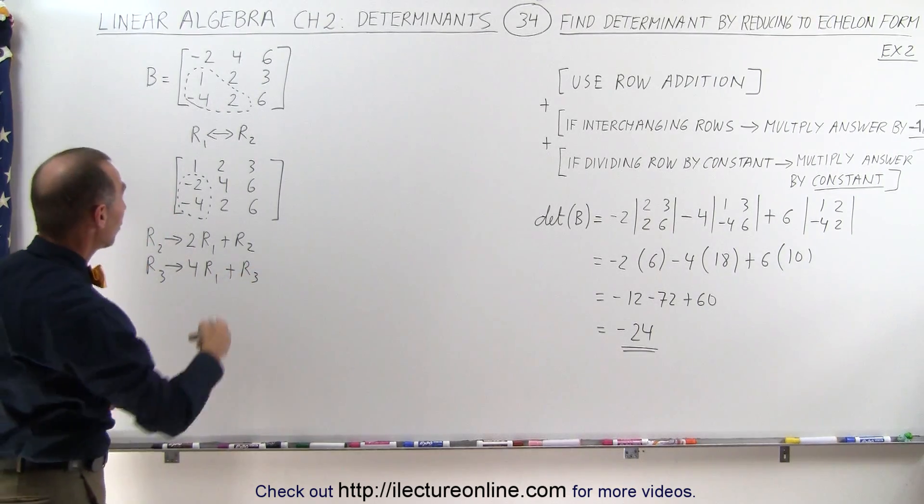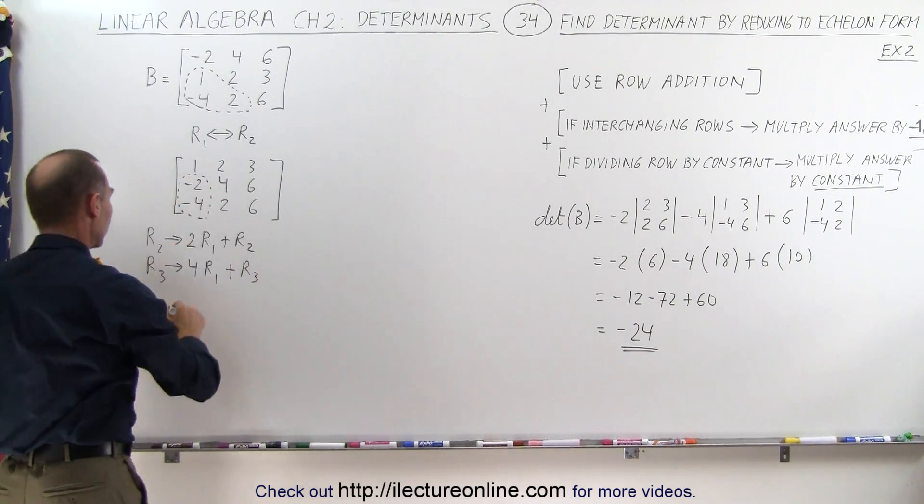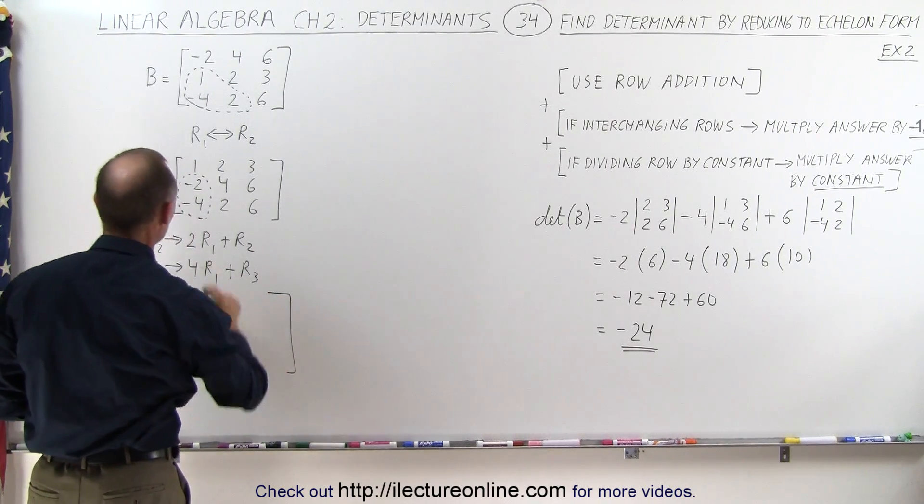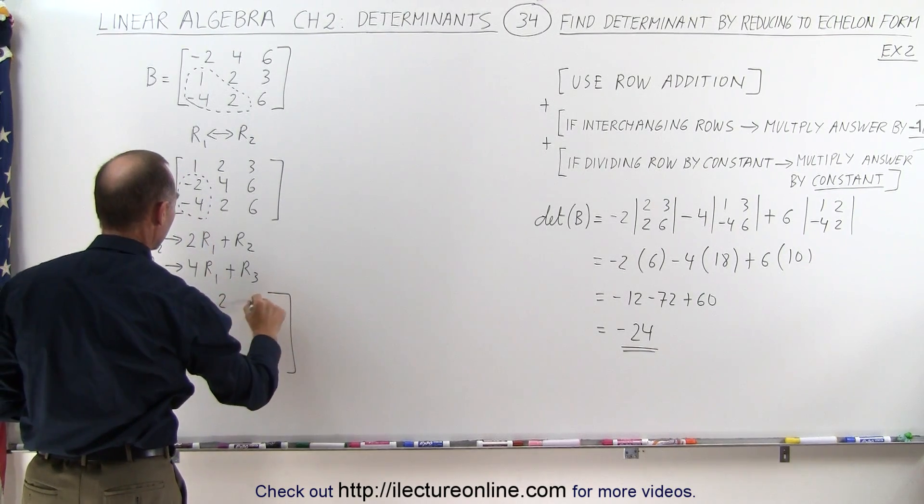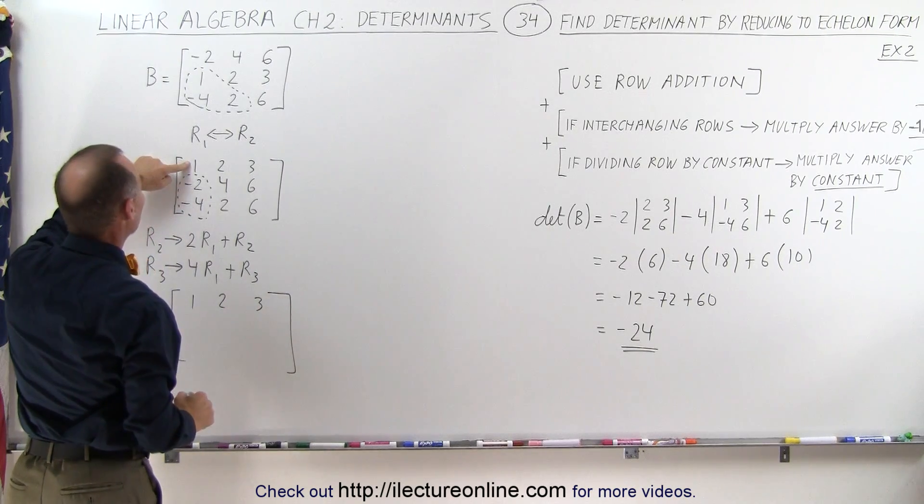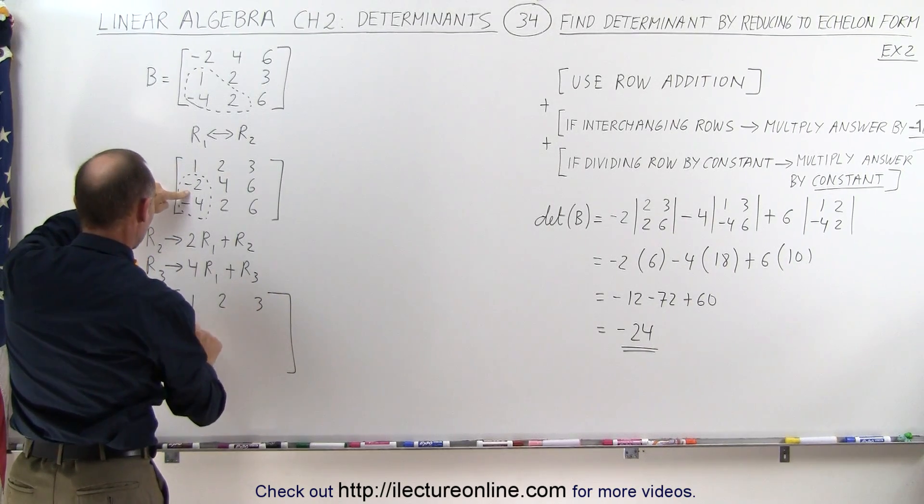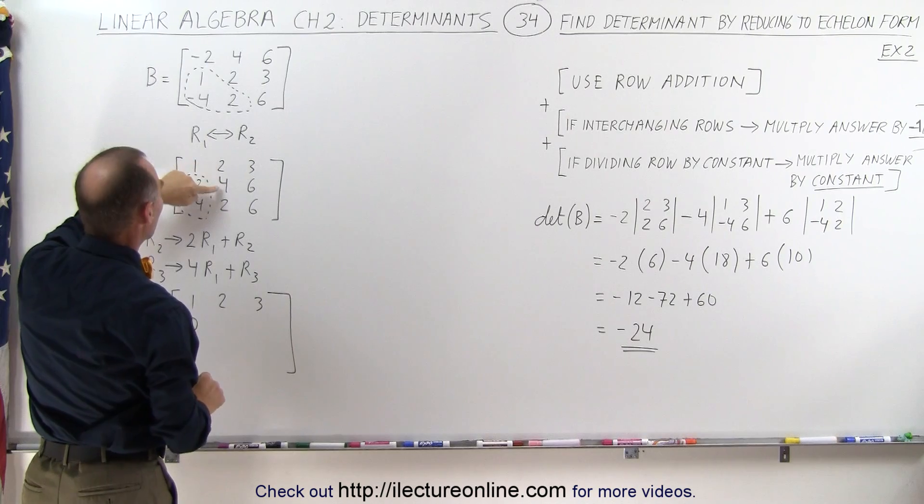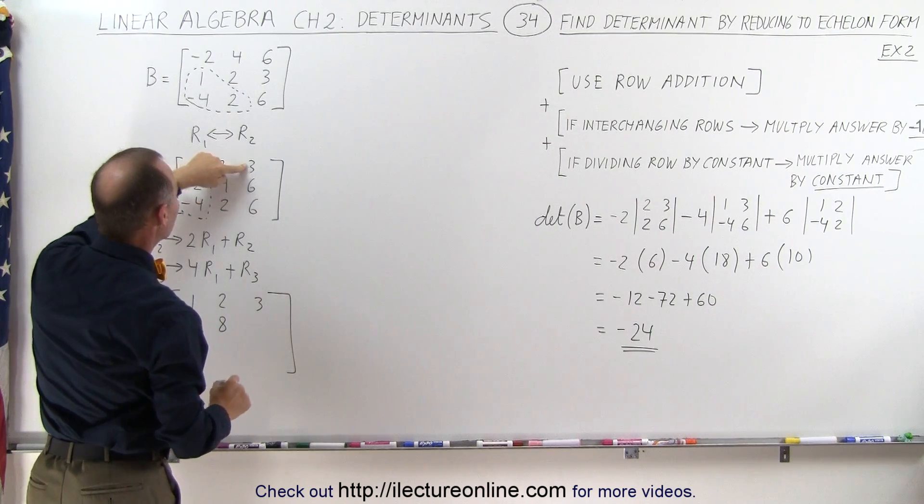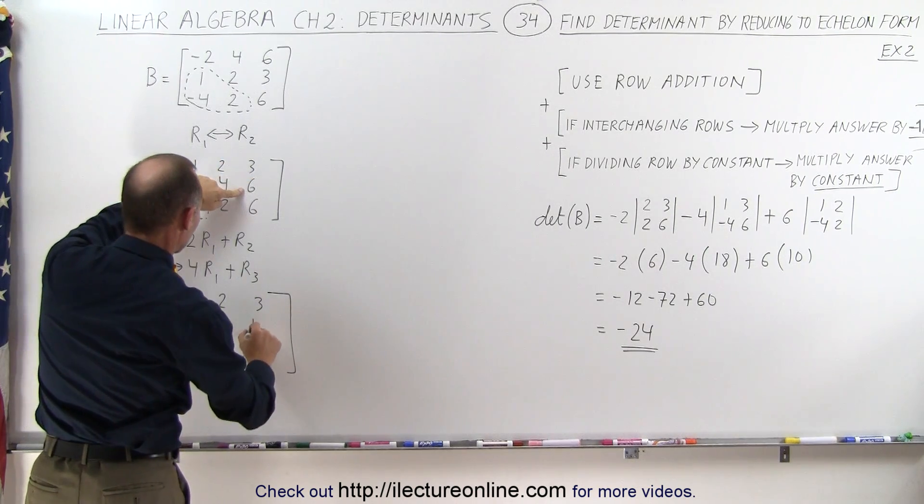When we do that, we're going to turn these two into zeros. So we get 1, 2, and 3. 2 times 1 is 2, added to 2 is 0. 2 times 2 is 4, added to 4, which is 8. 2 times 3 is 6, added to 6, which gives me a 12.